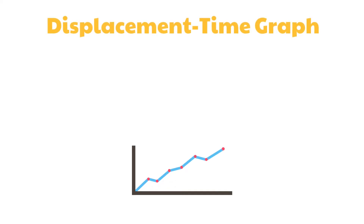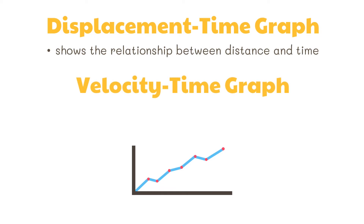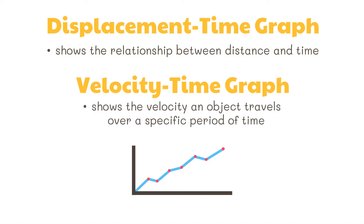Another helpful way to determine the motion of an object is by using graphs, such as a displacement-time graph which shows the relationship between distance and time, and the velocity-time graph which shows the velocity an object travels over a specific period of time.